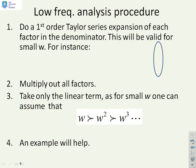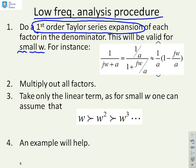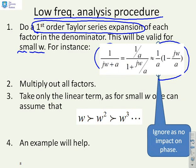What we're going to suggest is method 1, which is what I've called a low-frequency analysis procedure. All we're going to do here is a first-order Taylor series expansion of each factor in the denominator. Because this is a first-order expansion, it will be valid for small values of omega. Here's an example. If I have 1 over jω+a, then the first-order Taylor series expansion is 1/a times (1 - jω/a). Now we're going to ignore this 1/a term because it has no impact on the phase.